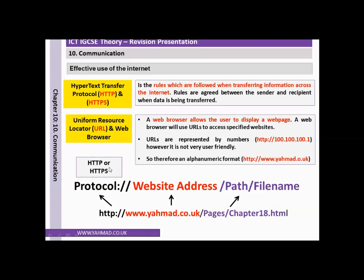HTTP and HTTPS are protocols — basically rules which we follow when transferring data across the internet. A URL is made up of the protocol at the start, such as HTTP, then the web address such as www.yacma.co.uk, then the path showing the folder in which the page is stored, and then the file name — for example, chapter18.html.